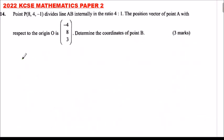2022 KCSE Mathematics Paper 2, number 14. Point P with coordinates 8, 4, minus 1 divides line AB internally in the ratio 4 is to 1. The position vector of A with respect to the origin O is minus 4, 8, and 3. Determine the coordinates of point B.